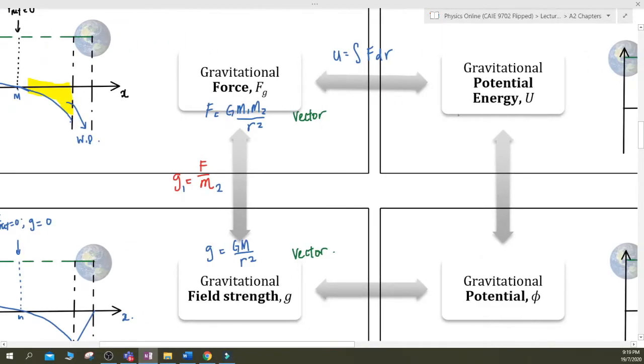But if you think about integrating 1 over r squared, you will get negative 1 over r. That's why the gravitational potential energy, U, is negative G M₁M₂ over r.